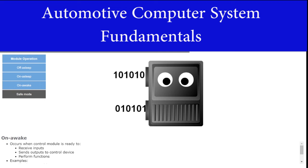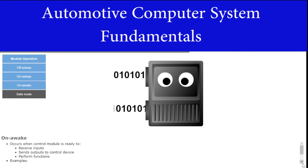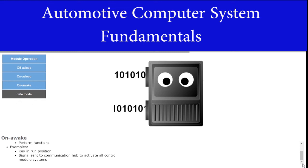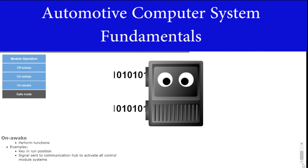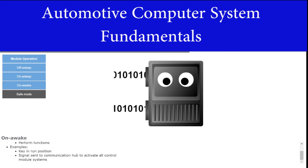On awake mode occurs when a control module is completely ready to receive inputs and send outputs to control devices or perform functions. A module will be in on awake mode when the key is in the run position or a signal is sent to the communication hub to completely activate all control module systems.